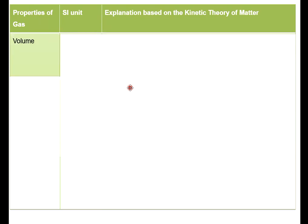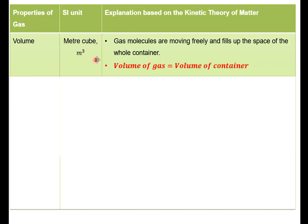Property of gas - the first one is volume. The SI unit for volume is meter cubed, or we normally use the symbol m to the power of 3. Explanation based on the kinetic theory of matter: the gas molecules are moving freely and fill up the space of the whole container. So the volume of the gas is assumed to be equal to the volume of the container.